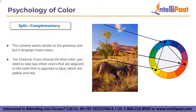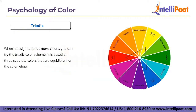Split complementary works similarly to the complementary scheme but employs more colors. For instance, if you choose blue, you take two others adjacent to the opposite color — meaning yellow and red. The contrast here is sharper than in the complementary scheme, but it also allows using more colors.